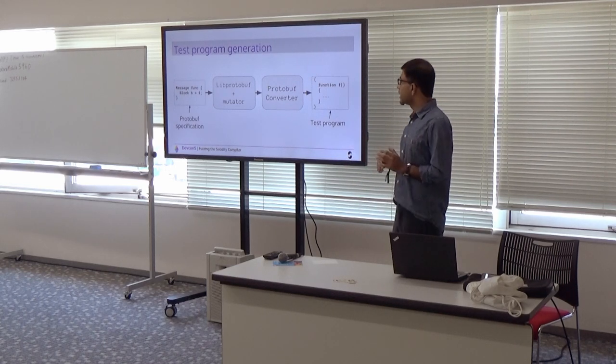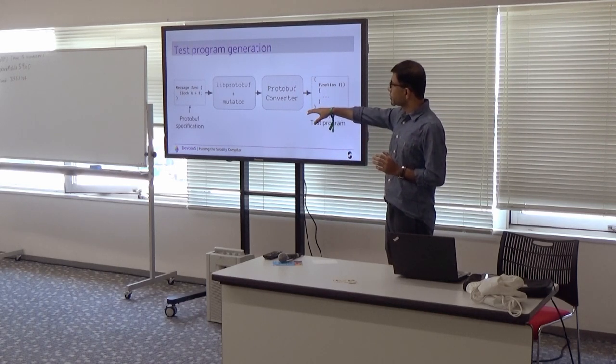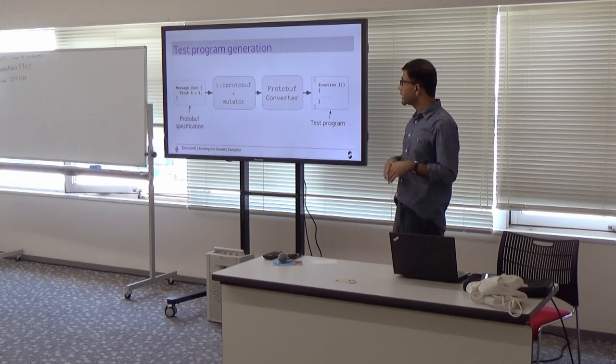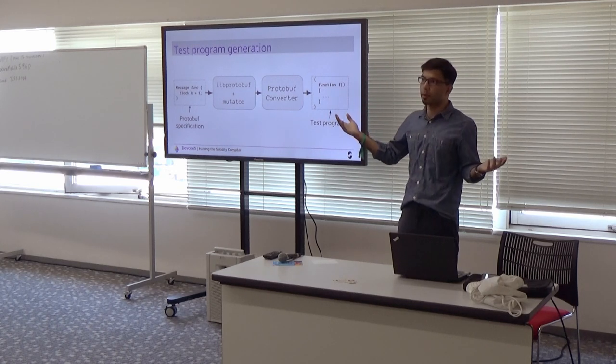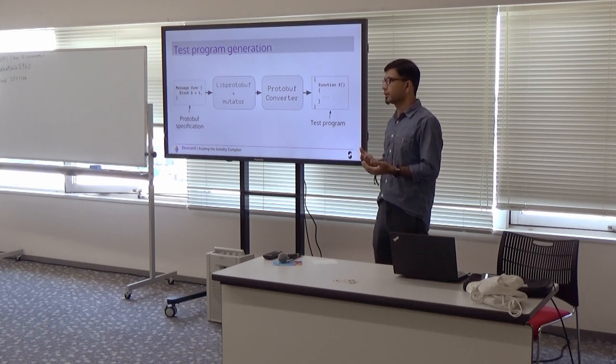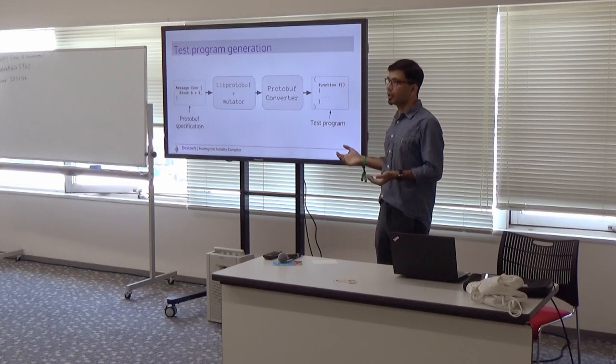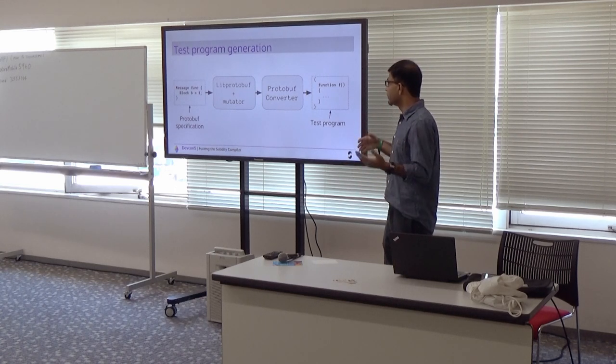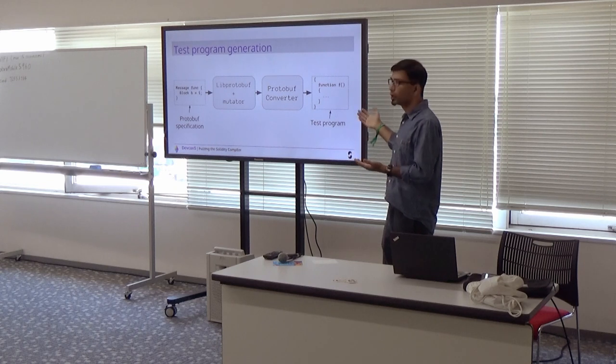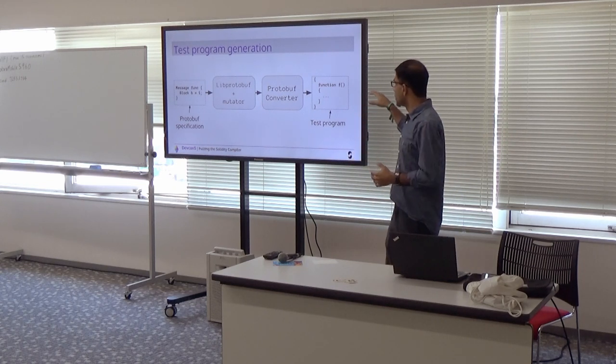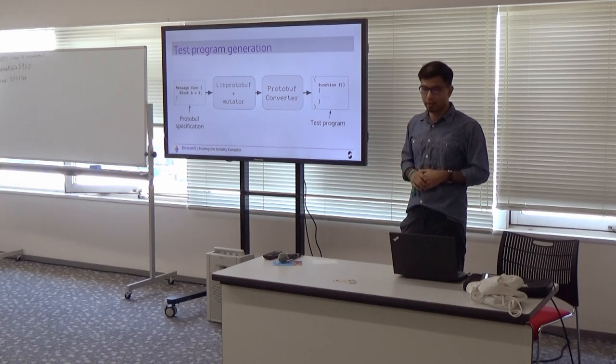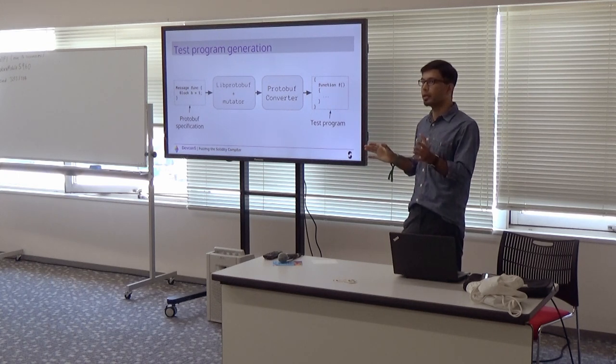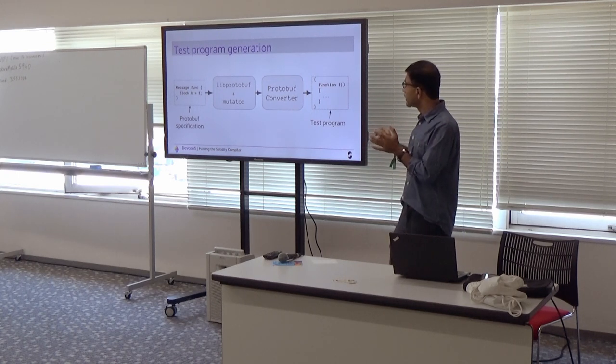So to put these two pieces together, what we have is a specification that we handwrite in the beginning, and a library called libprotobuf mutator. We use that library to generate input, but that input is not ready to be fed yet because it's in protobuf language. So we use a program called protobuf converter which converts from this language to a valid test program that can then be fed to the compiler. So finally, we have an input that could be used to test the compiler.